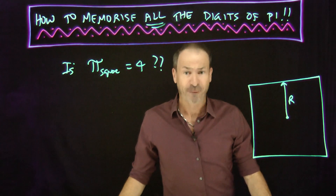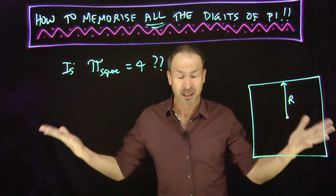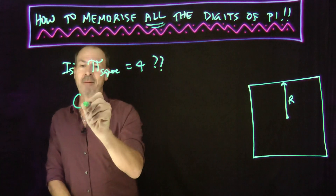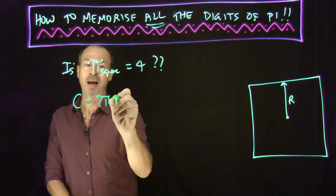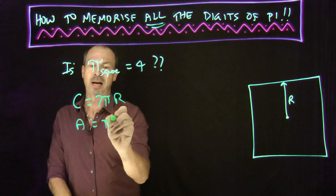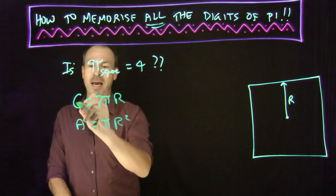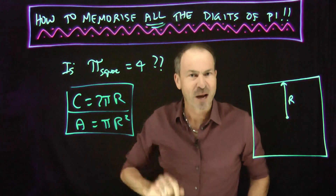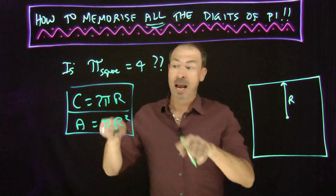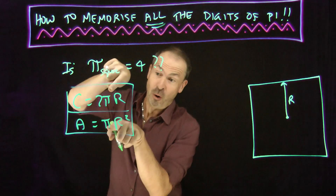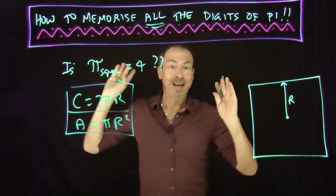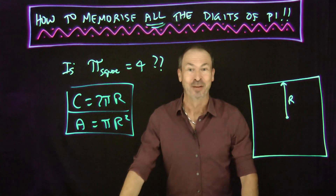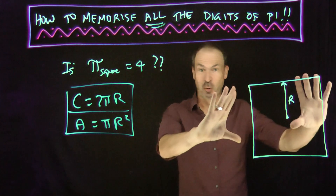Here's the thing: when people say 'how many digits of pi have you memorized,' most people don't specify which pi they're talking about. So if you want to be a bit clever and smug, you can say: 'I'm going to assume you're talking about pi for a square, in which case I've memorized all the digits of pi.' Oh my goodness — how to be a little bit annoying in mathematics!